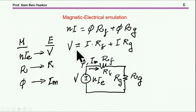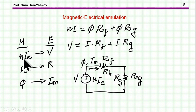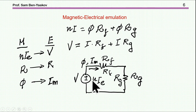Looking at this equation, it looks like Ohm's law or Kirchhoff's law — we have a similarity here. Indeed, we can represent this reluctance relationship as an electric circuit emulated by an electric circuit. What we are doing is representing N·I (the MMF) by a voltage in the electrical circuit, the reluctance by a resistance, and the flux by the current in the magnetic circuit. Here is the reluctance equivalent: voltage represents MMF, current represents phi, and resistances represent reluctance.